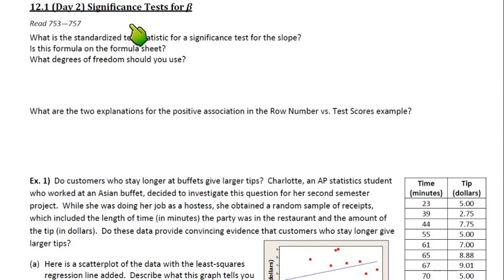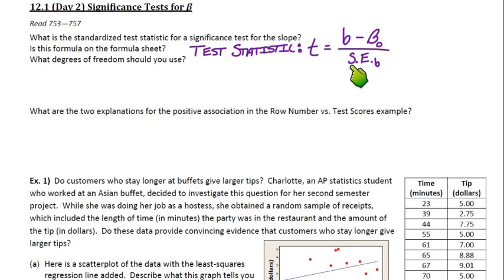So we're going to talk about significance tests for beta, which is the slope of the population regression line. The first part here says what is the standardized test statistic for a significance test for the slope. It's not a z-score, it's actually a t-score. We're going to take the sample slope minus zero, or in this case we can call it beta sub-zero, the beta from the null hypothesis, divided by the standard error of the slope.